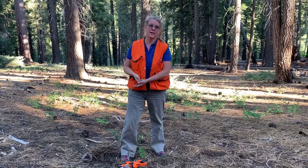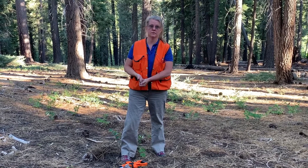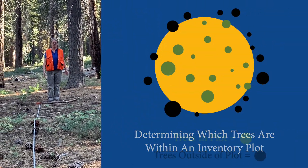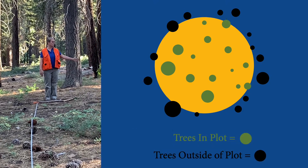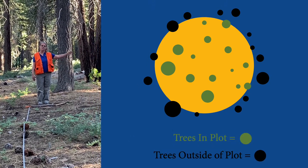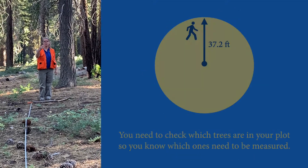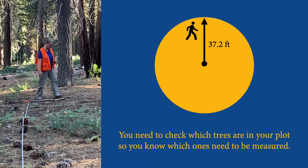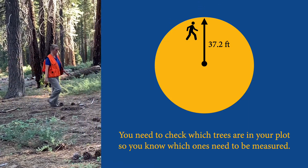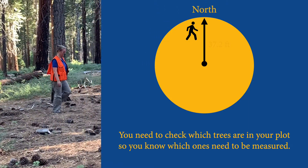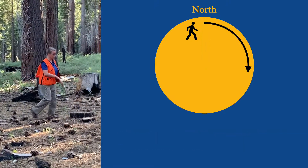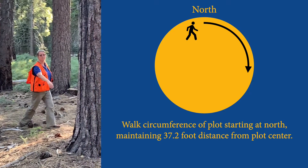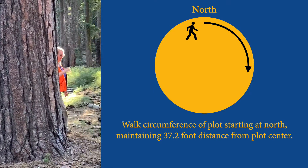I'm going to measure the diameter and height of each one of those trees. Now I'm going to use this radius of the plot and walk around to identify which trees are in and which trees are out. I'm going to keep you, the viewer, at the center of my plot and try to walk this same 37.2 feet around. Everything on my left is going to be out and everything on my right is going to be in. Here's a nice beautiful pine tree — that one's in.